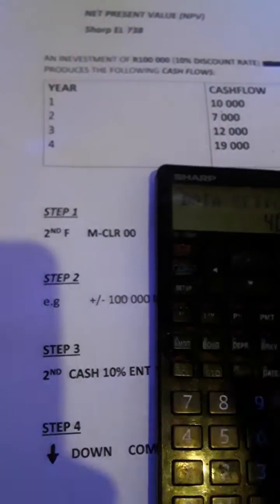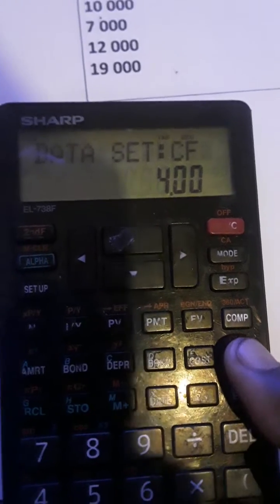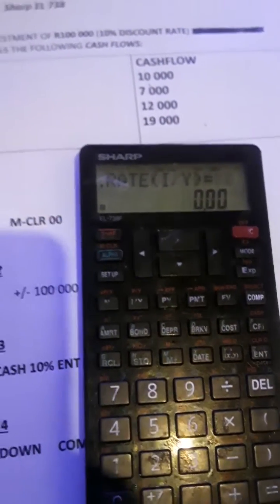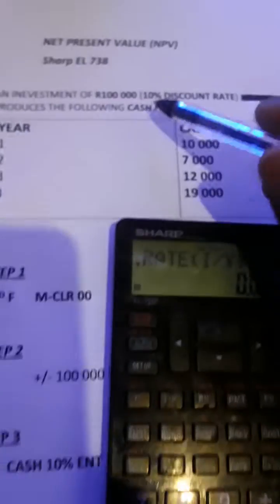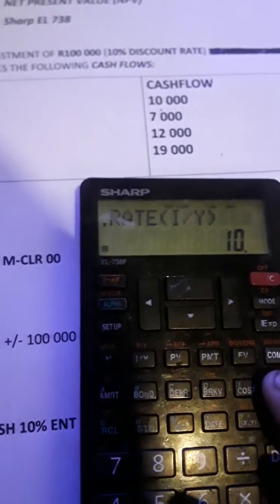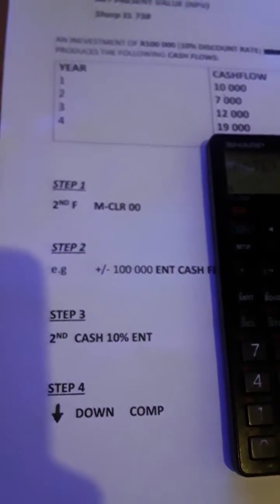So now our option three, we have to go second function CASH. You see the CASH here just above the CI. And our rate, our I/Y, is discounted at ten percent. So we just go ten percent, enter, like I illustrated on the steps.